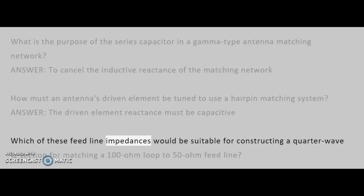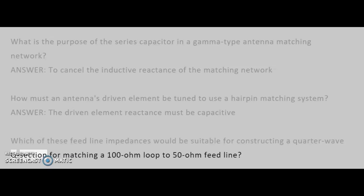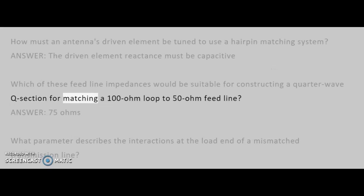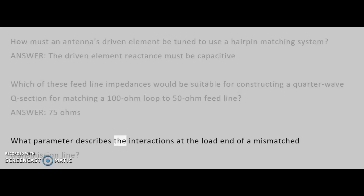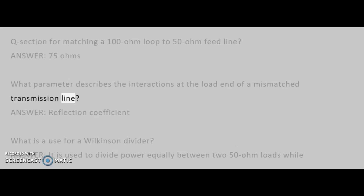Which of these feed line impedances would be suitable for constructing a quarter-wave Q section for matching a 100 ohm loop to a 50 ohm feed line? What parameter describes the interactions at the load end of a mismatched transmission line?